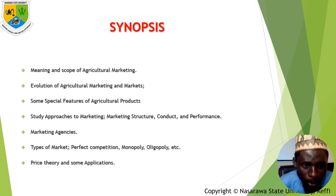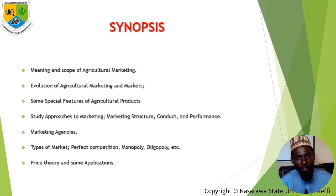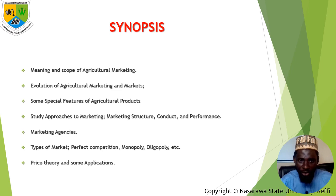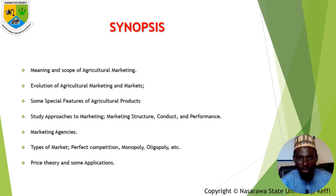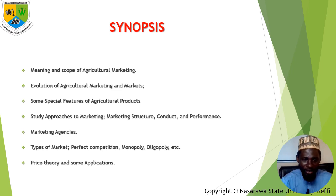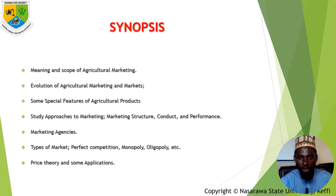The course will cover the meaning and scope of agricultural marketing, evolution of agricultural marketing and market, some special features of agricultural products, study approaches to marketing, marketing structure, conduct and performance, marketing agencies, forms of markets and types of markets, perfect competition, monopoly, oligopoly, etc.